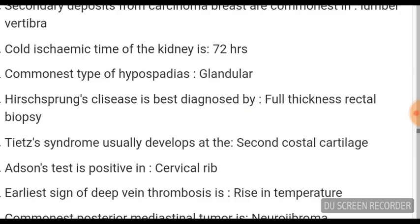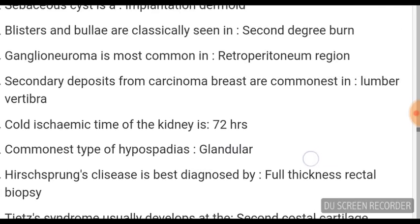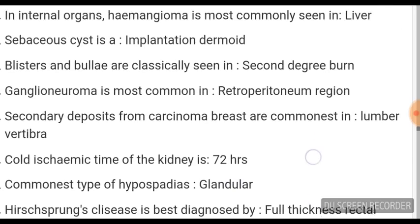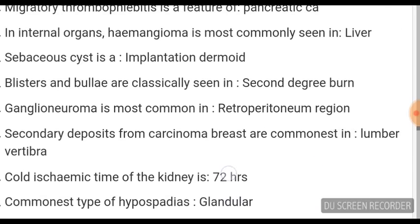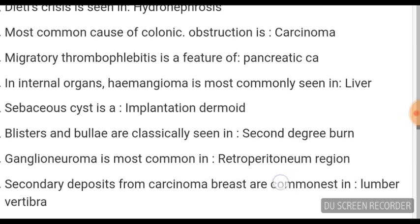The commonest type of hypospadias is glandular. Cold ischemic time of the kidney is 72 hours. Secondary deposits from carcinoma of the breast are commonest in the lumbar vertebrae — important.